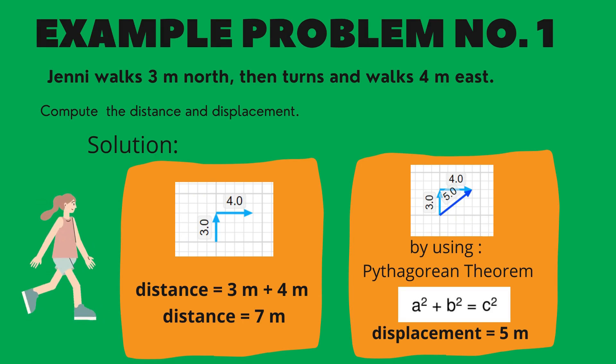To compute the distance just add 3 meters and 4 meters. It will give you a value of 7 meters. The distance is equal to 7 meters. To compute the displacement we'll be using Pythagorean theorem and this will give you a result of 5 meters. Displacement is equal to 5 meters.